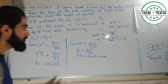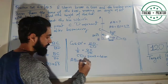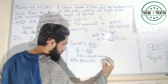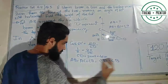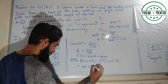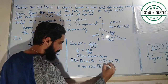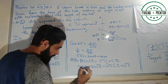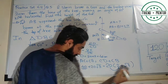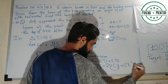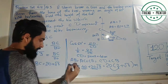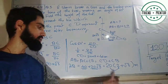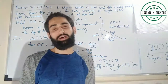Now, AB equals AC plus CB. Since AC equals CD, we have AB equals CD plus CB, which is 40 plus 20√3. Taking 20 as common: AB equals 20 times (2 + √3). Therefore the height of the tree is 20(2 + √3) meters.